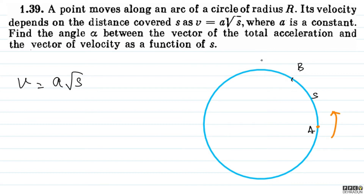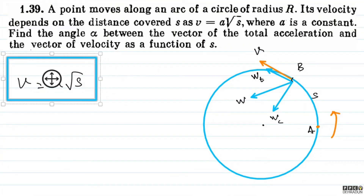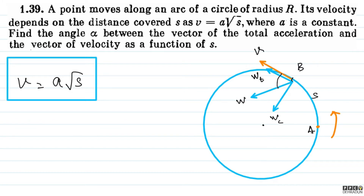Our velocity vector and the total acceleration vector make an angle alpha. Here I have a diagram showing Wt, Wc, and W — that is tangential acceleration, centripetal acceleration, and net acceleration. Along the tangent, V will be clear. Basically, this angle is alpha, which we will find.